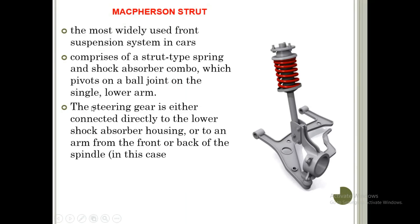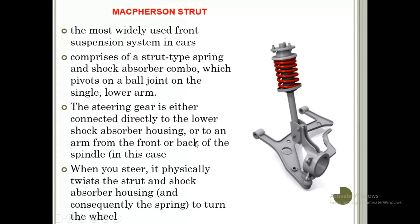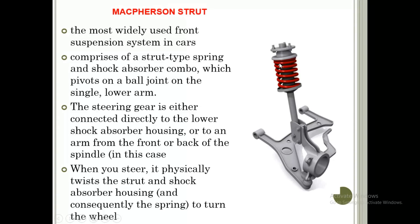In the MacPherson strut, the steering gear is either connected directly to the lower shock absorber housing or to an arm from the front or back of the spindle. When you steer, it physically twists the strut and shock absorber housing, causing the spring to turn the wheel. The MacPherson strut consists of a strut-type spring and shock absorber assembly and is typically located at the front wheel of an automobile.